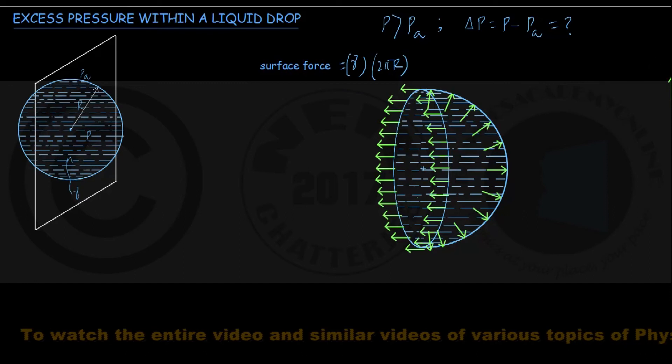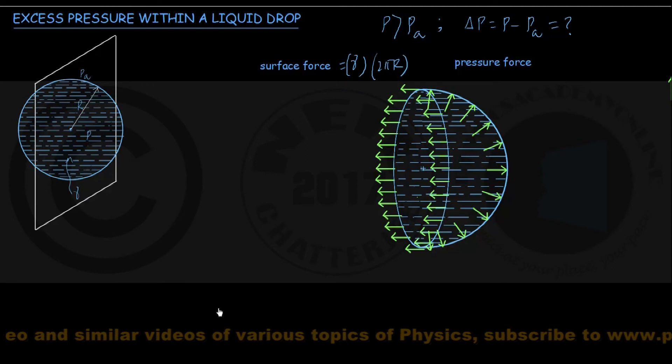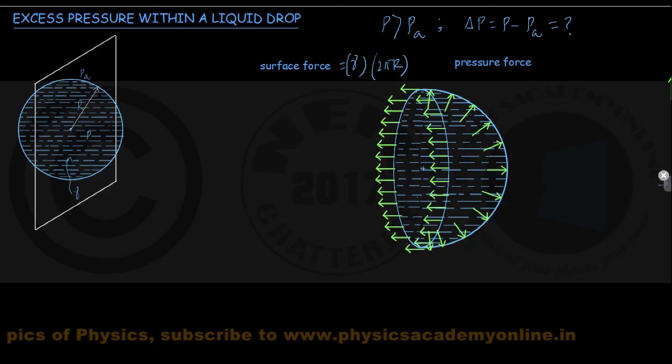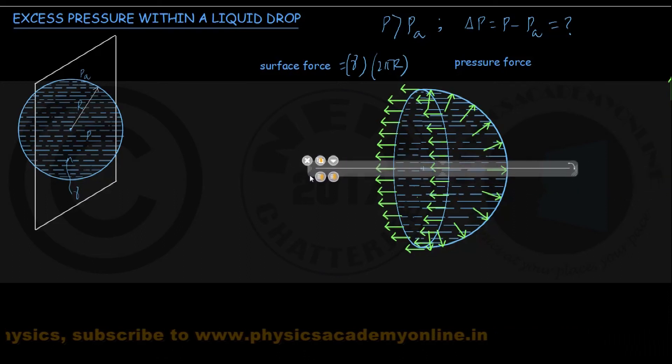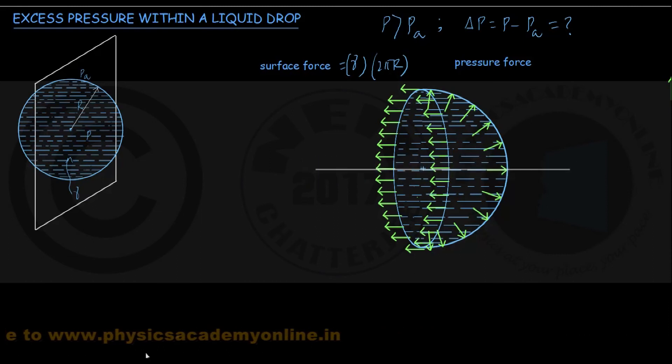How to add these forces vectorially and get an expression for the net pressure force acting on the hemisphere in the horizontal direction? For that, we shall take two small areas on the hemispherical surface at equal distance from the axis of symmetry. Here is my axis of symmetry drawn for the hemisphere passing through the center horizontally. Suppose I take two tiny areas of dA each above and below this axis of symmetry.